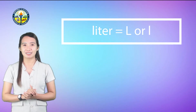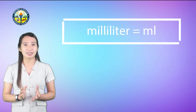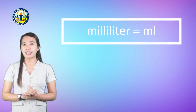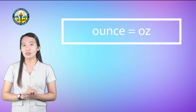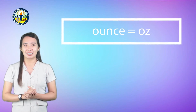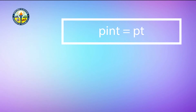For liter, the cooking abbreviations are big letter L or small letter L. For pound, the cooking abbreviation is LB. For milliliter, the cooking abbreviation is ML. For ounce, the cooking abbreviation is OZ. And for pint, the cooking abbreviation is PT.